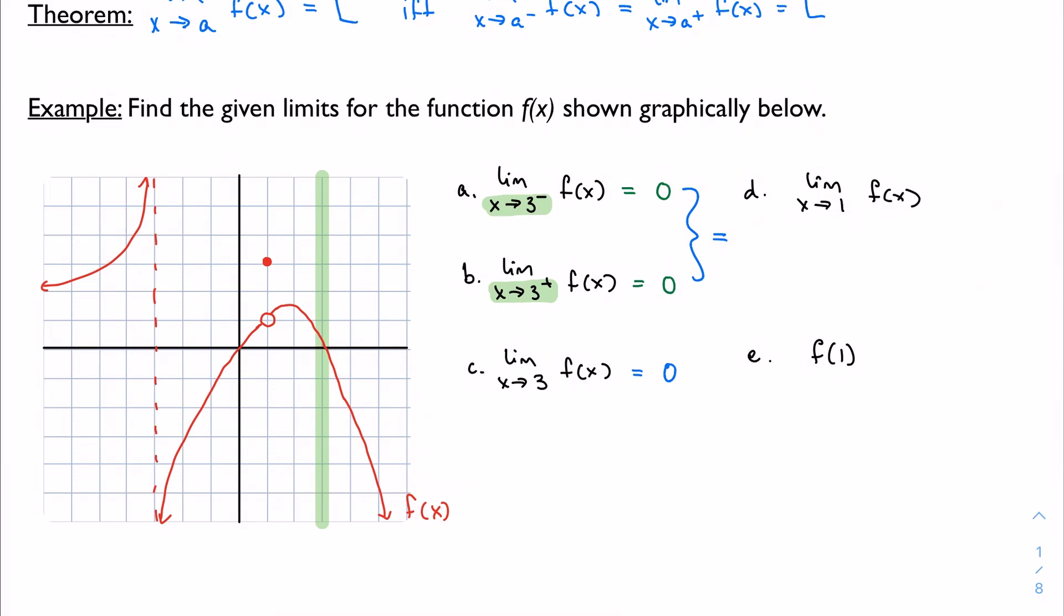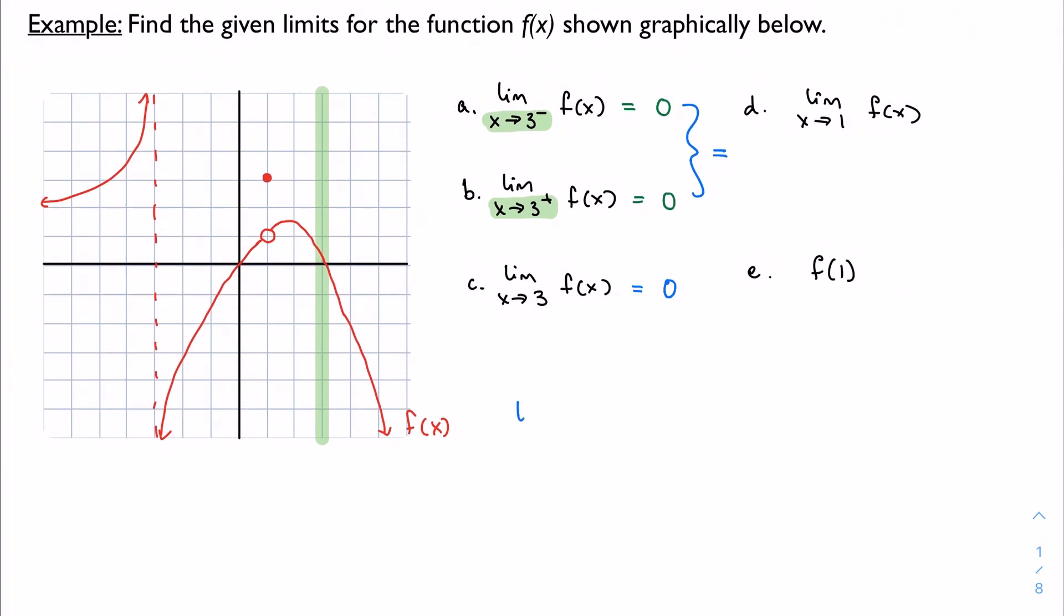Real quick, just to show you a case where this wouldn't exist, let's talk about the limit as x approaches negative 3 in this graph. Here is negative 3. As I approach from the left, I'm getting bigger and bigger, tending toward positive infinity. From the right, we're approaching negative infinity. Well, those are not equal. When they don't line up, we can't draw a conclusion, so we would say that limit does not exist, DNE.